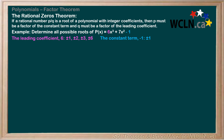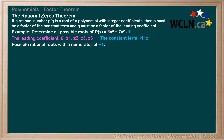So how do we get the potential roots from these lists of factors? We have to generate all possible rational numbers whose denominators, q, come from the factors of the leading coefficient, and whose numerators, p, come from the factors of the constant term. Let's start by generating all the possible rational roots with a numerator of positive 1: we could have 1 over 1, 1 over negative 1, 1 over 2, 1 over negative 2, 1 over 3, 1 over negative 3, 1 over 6, or 1 over negative 6.